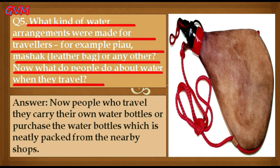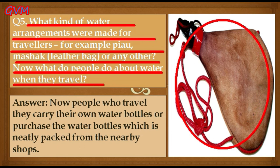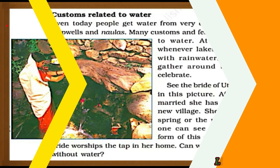What kind of water arrangements were made for travelers? For example, piao or musha — a leather bag — or any other. What do people do about water when they travel now? The image shows the musha, a leather bag that people used to carry as a water bottle. Now, people who travel carry their own water bottles or purchase neatly packed water bottles from nearby shops.